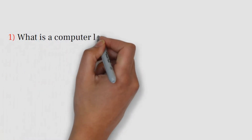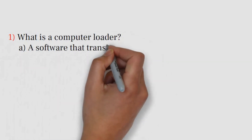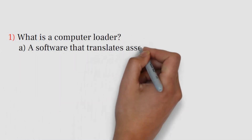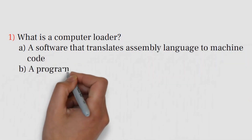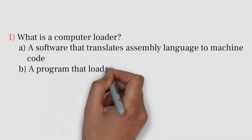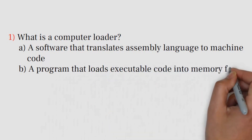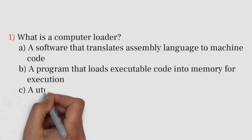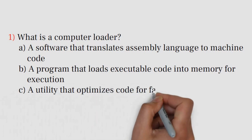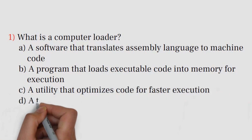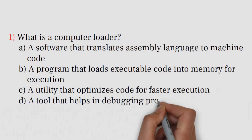Question number 1. What is a computer loader? A. A software that translates assembly language to machine code. B. A program that loads executable code into memory for execution. C. A utility that optimizes code for faster execution. D. A tool that helps in debugging programs.